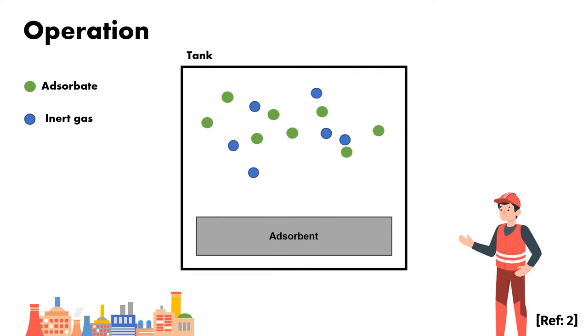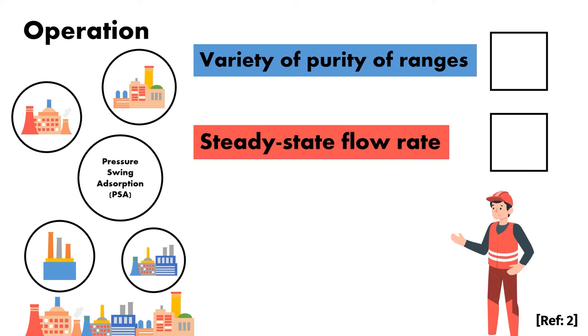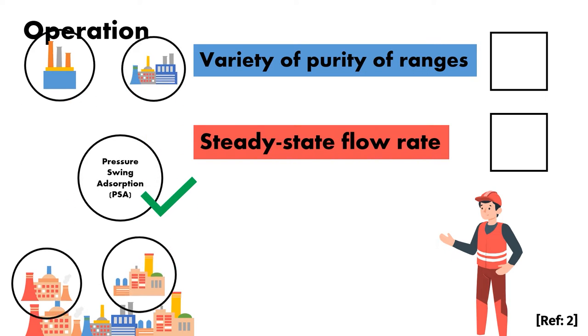PSA operates based on the principle of the adsorption process. It is a continuous process. PSA has some superior characteristics over other nitrogen production processes, as it can produce nitrogen at a variety of purity ranges.